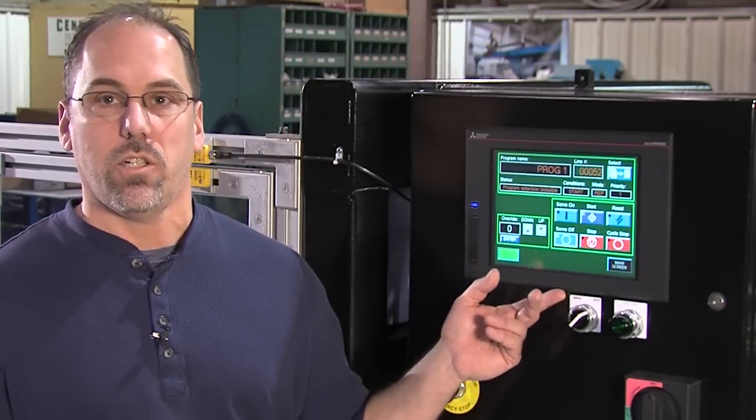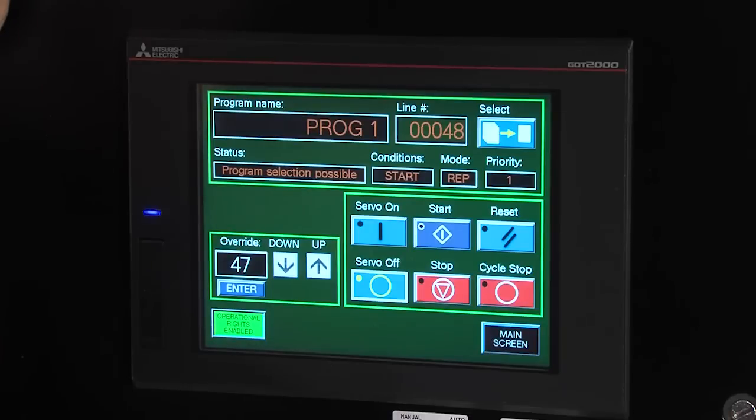With our HMI controller, our GOT controller, we are able to disconnect the teach pendant, and we have all the controls that you would normally have on the run screen of the teach pendant. From the screen, I can select programs, I can turn the servos on and off, start and stop programs, reset errors, and also change the speed.